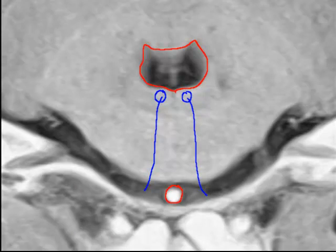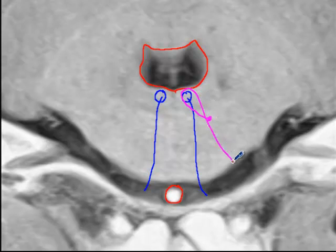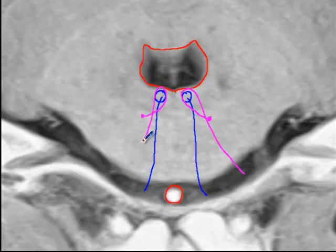The seventh nerve nucleus is located somewhere around here. The seventh nerve fascicle goes around the sixth nerve nucleus, puts a dent on the wall of the fourth ventricle, and leaves the pons around here. So the seventh nerve nucleus moves around the sixth nerve nucleus, puts a dent on the wall of the fourth ventricle, and leaves here. These dents are called the facial colliculi.